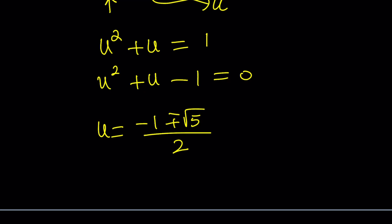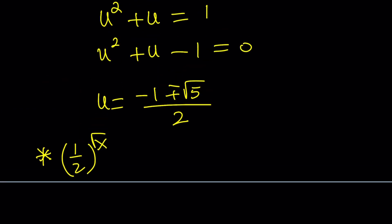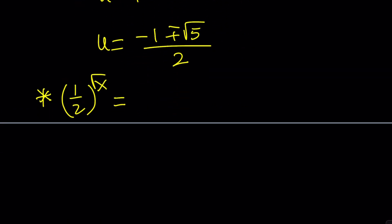And we got the solutions. Notice that one of the solutions is negative and the other one is positive. So let's look at both cases. Case number 1: 1 half to the power square root of x, which is u, is equal to negative 1 plus root 5 over 2. And negative 1 plus root 5 over 2 is greater than 0 because root 5 is greater than 1. This is important because any positive base to any real power must be greater than 0. As long as the base is not 0, it's not going to be 0. So since the right-hand side is positive, we have a real solution.